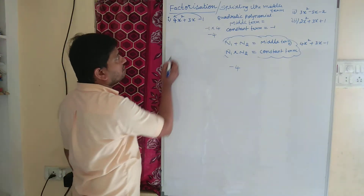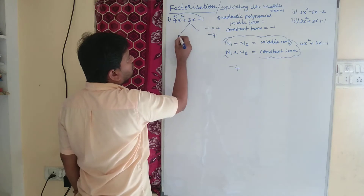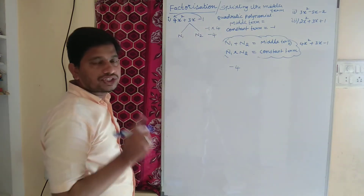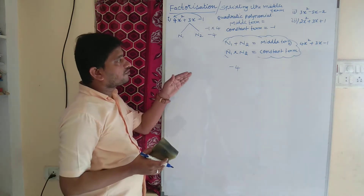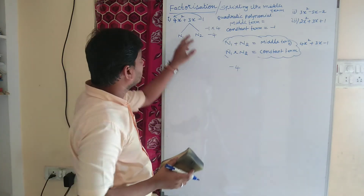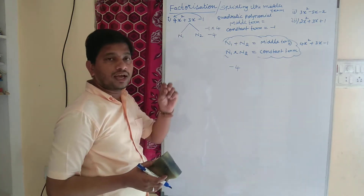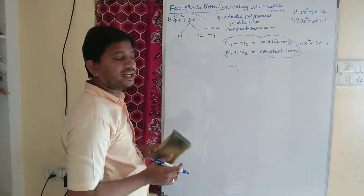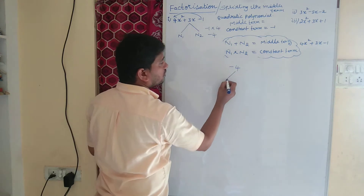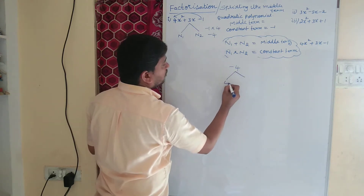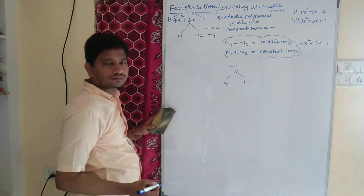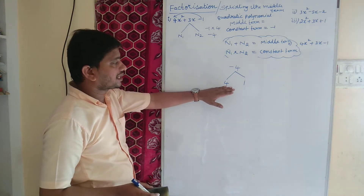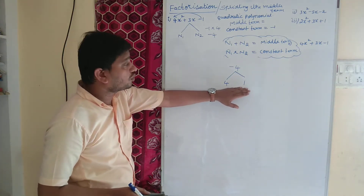So again we need to split the middle term into two numbers, n1 and n2. What is the first condition? The sum of the two numbers must equal the middle term and the product of the two numbers must equal the constant term. The factors of 4 are: 4×1 and 2×2. The condition will be satisfied by 4 and 1.